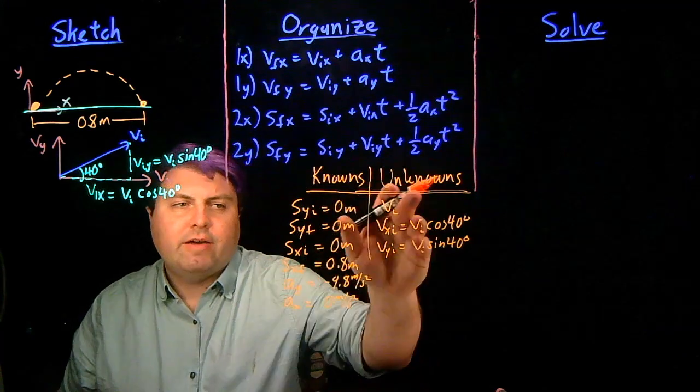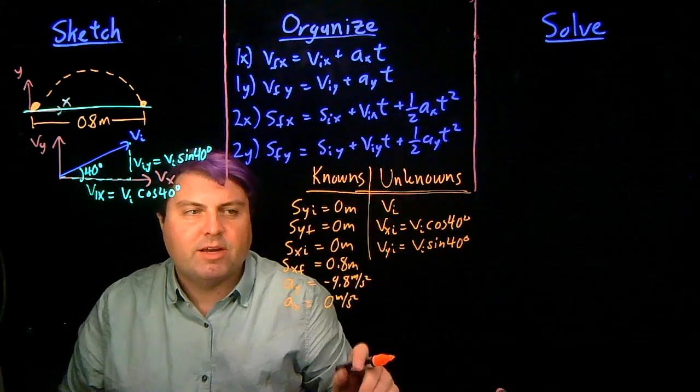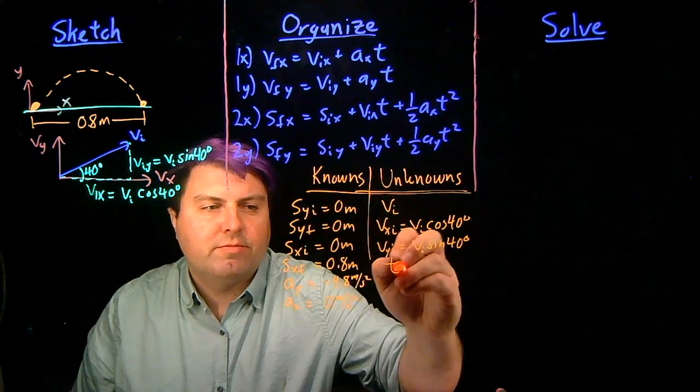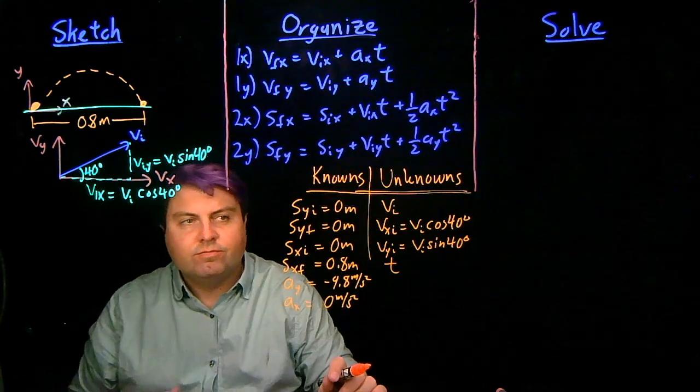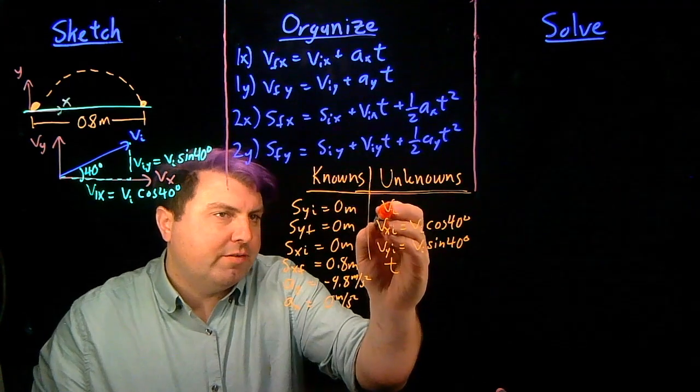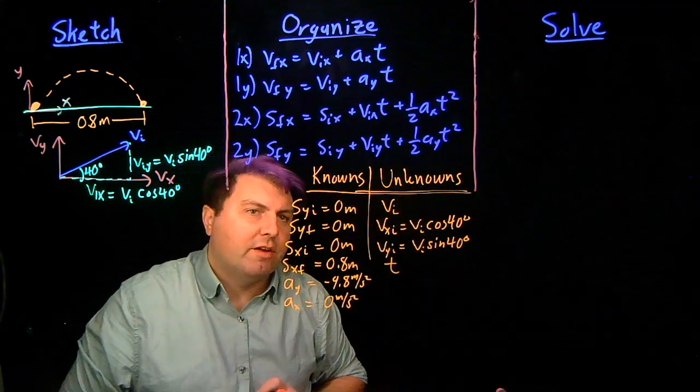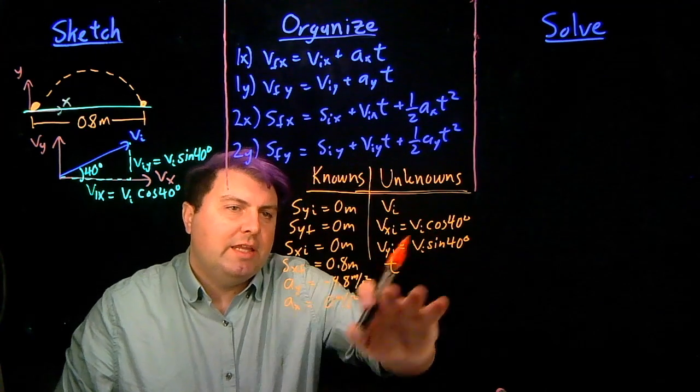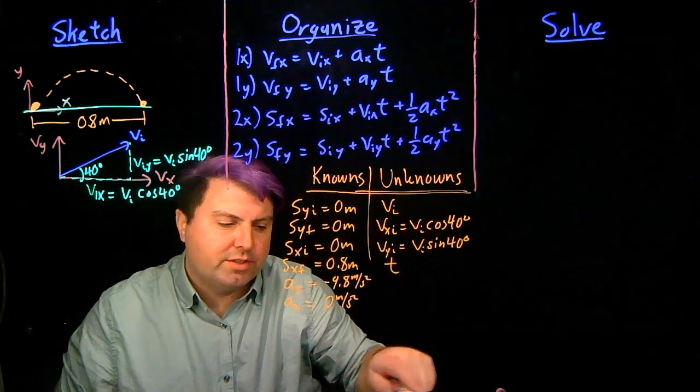And then we don't have time in our knowns, we don't have time in our unknowns, so we're going to want to put time in our unknowns. So we're really solving for vi, but we also need to solve for time. We don't have anything involving final velocity, and we have a lot involving positions.